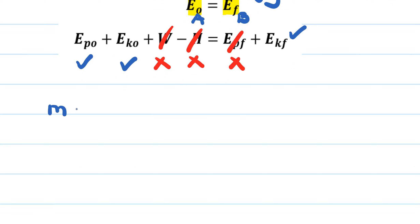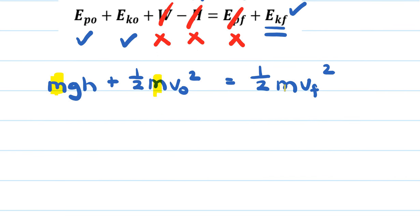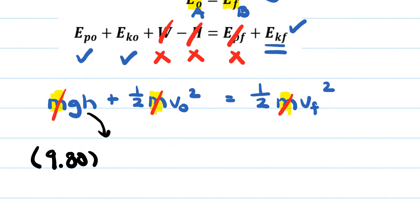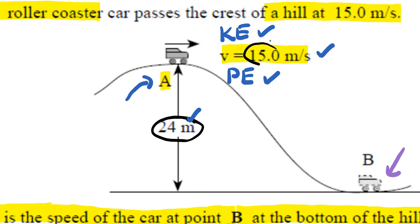Writing out the full equation: mgh + ½mv₀² = ½mvf². The mass appears in all three terms and can be cancelled. Plugging in: g = 9.80, height = 24 meters, and initial speed v₀ = 15 meters per second. So: 9.80 × 24 + ½ × 15² = ½ × vf².